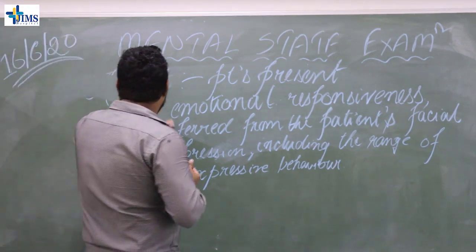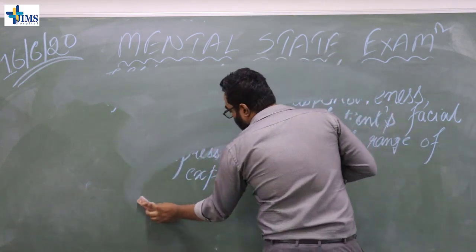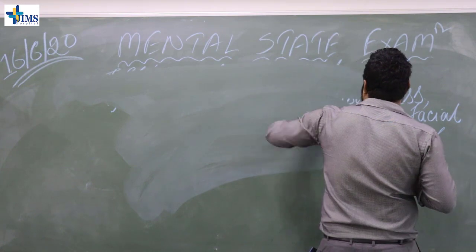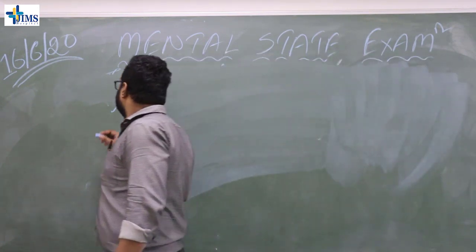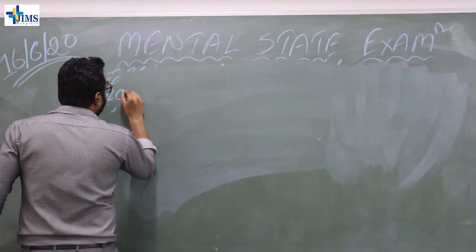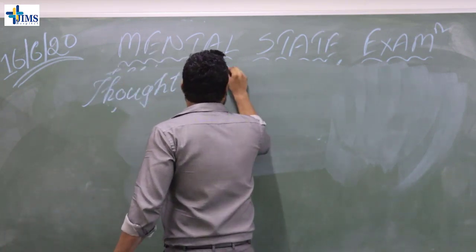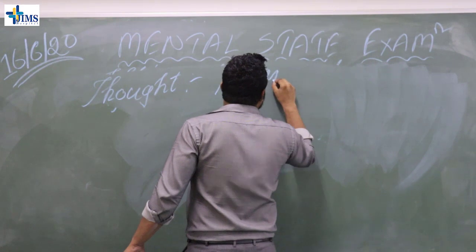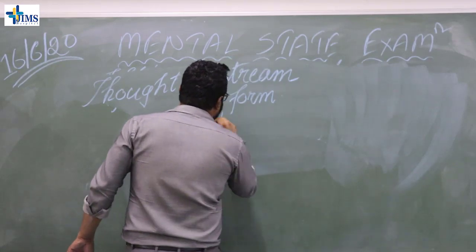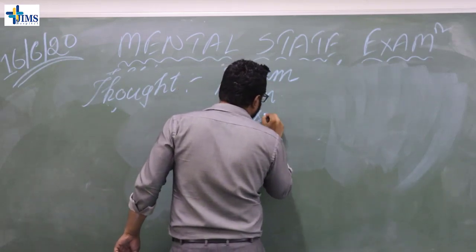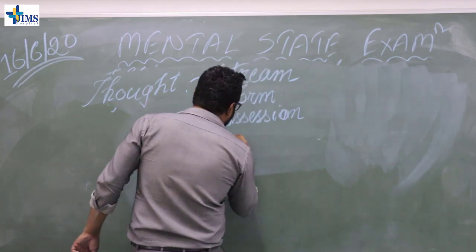After that, we have also learned last week about thought. I have told you about the four sub-topics of thought: we should have learned about stream, form, possession, and content of thought.